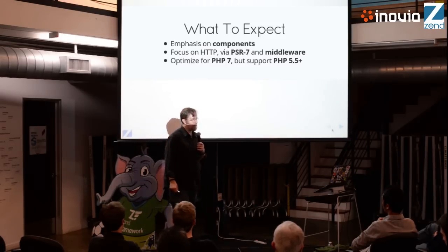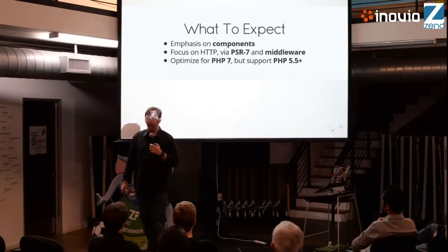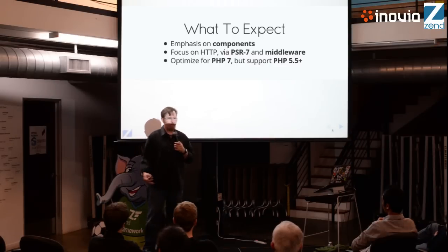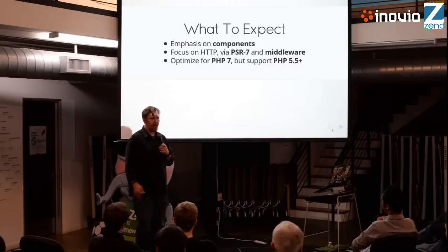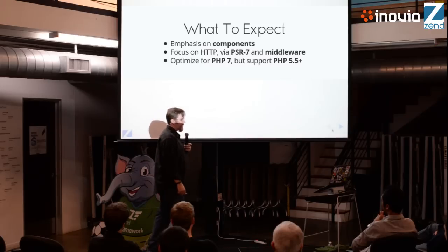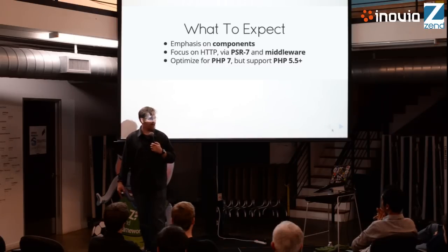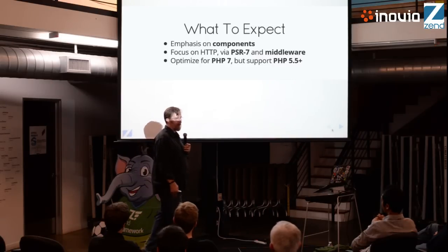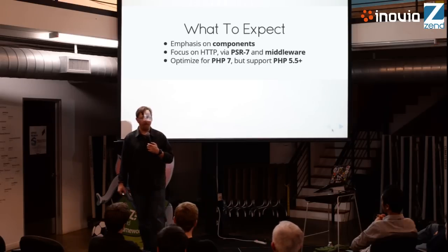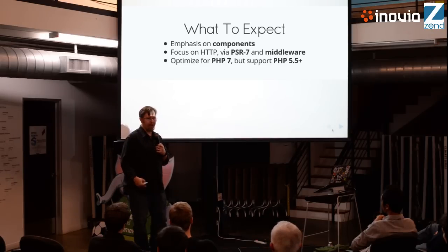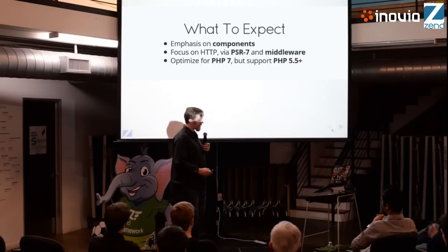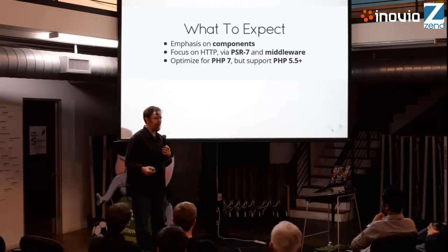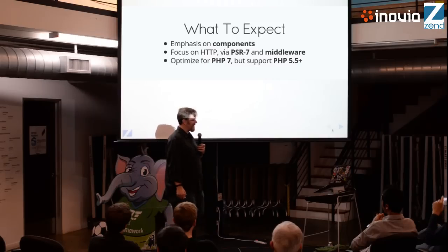Finally, we are going to be updating the minimum required version. Right now we're at 5.3.23, and we're going to be moving up to 5.5 as the minimum. Even 5.4 is going end-of-life pretty soon, so we need to keep up to date. We're also going to be optimizing for PHP 7, which is supposed to come out at the end of the year. The Zend Framework 2 test suite is running on it right now. Feel free to jump in and ask questions — the people watching the recording don't get that opportunity, so please do.